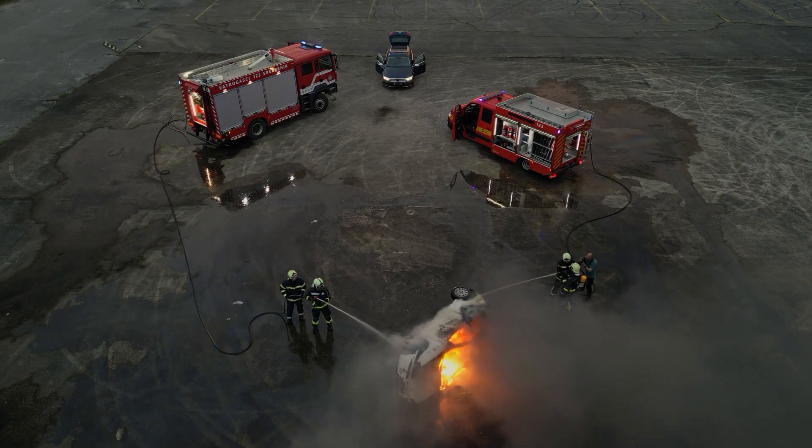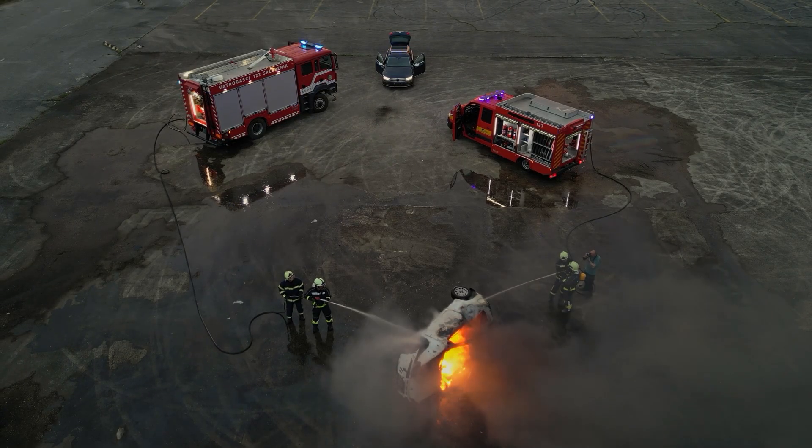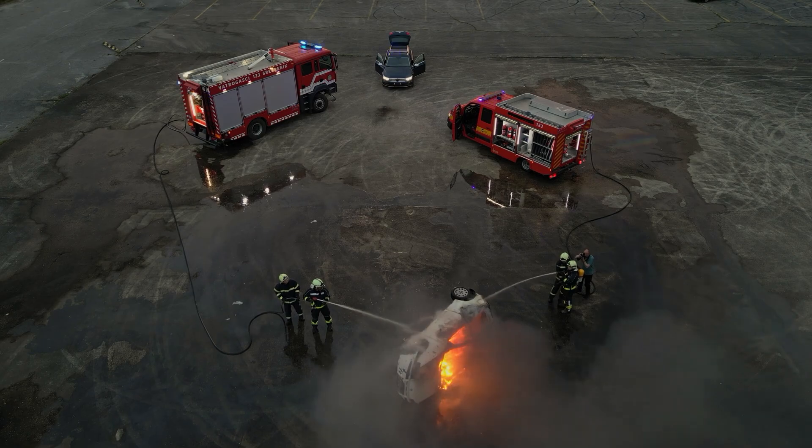In fact, to put out an EV fire, firefighters often have to use up to 40 times more water than putting out a normal car fire. On a few occasions, when a power wall or electric vehicle caught on fire, apparently Tesla's official response was to simply let it burn out over 24 hours. And we begin to understand why. EV battery fires can also spontaneously reignite even after the flames are extinguished, so it gets pretty tricky.